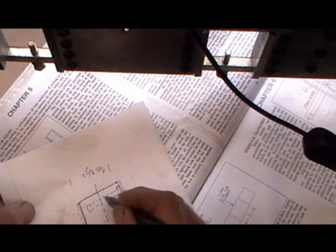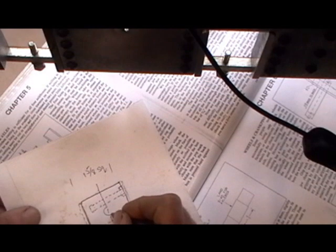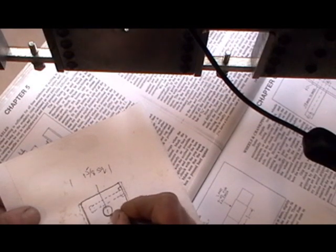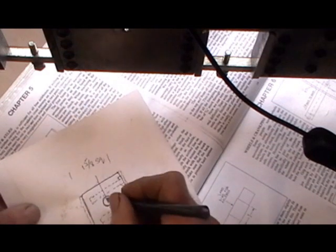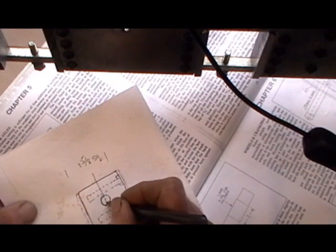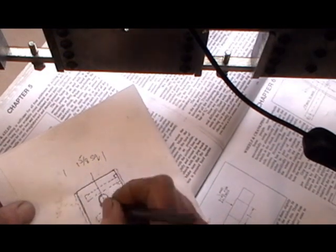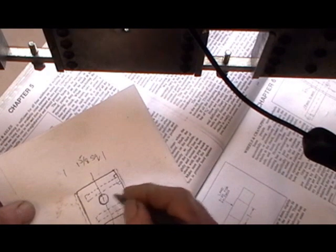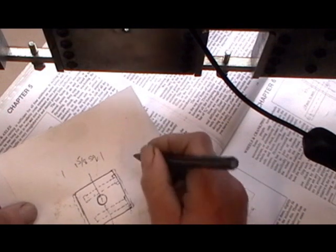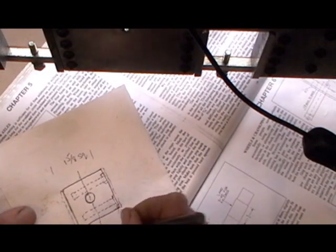Once I've got my dimensions, I shall then bore my hole in it, three-quarter diameter hole for the axle. Then once that is in and everything's machined up, including my slots which will be on the side view.